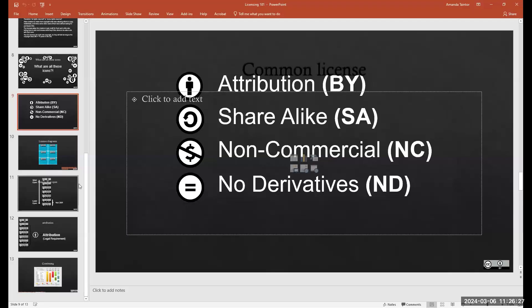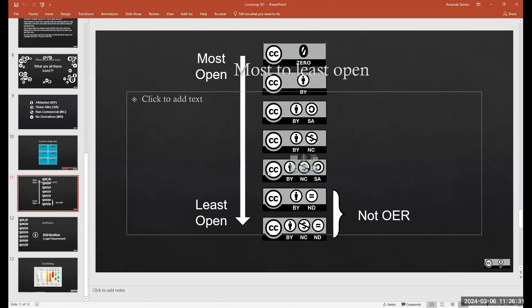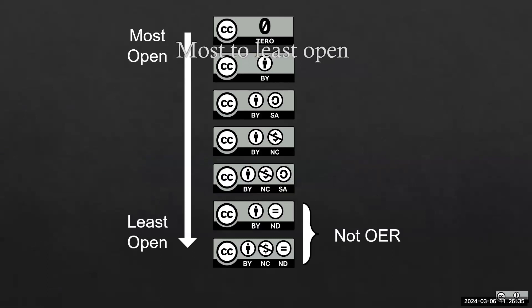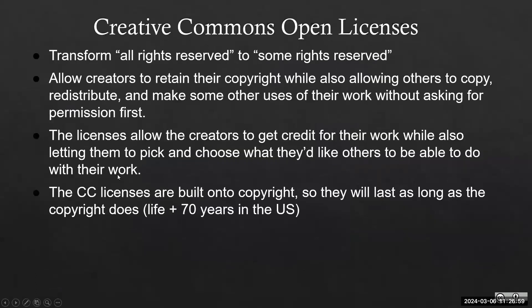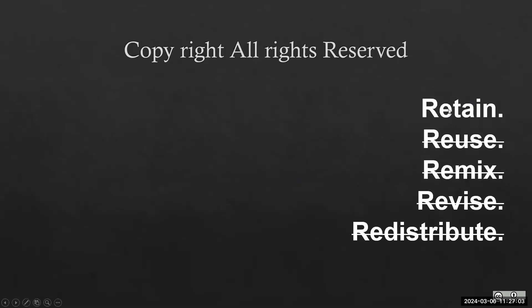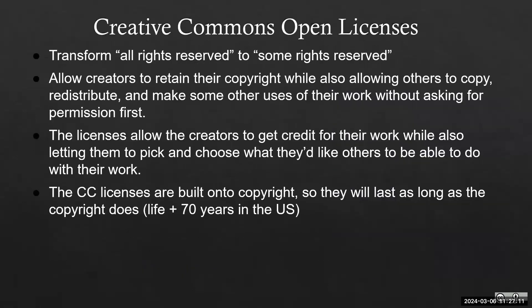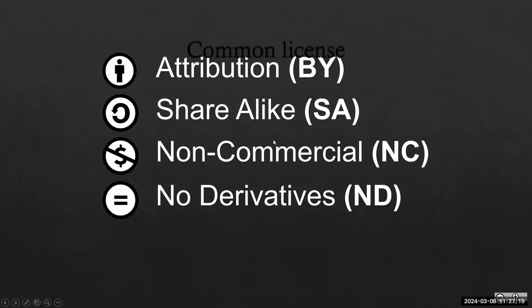Most of the time when you look at a piece of content you're going to see one of these icons, and that's what lets you know it is an openly licensed piece of content. Sometimes it'll just say 'this is copyright protected under a Creative Commons 4.0 license.' When people see 'copyright protected' they'll automatically think 'oh no, I can't use this' — but remember, a Creative Commons license is a copyright-protected piece of content; you're just letting the downstream user know they can do more with it.